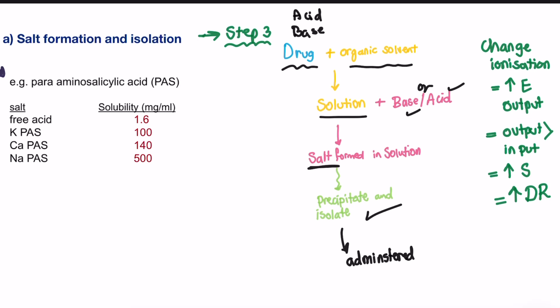See the example of para-aminosalicylic acid, or PAS. When it is used as a free acid, it showed a solubility of 1.6, where when it was used as a potassium salt, the solubility increased to 100. And the sodium one has a solubility of 500.